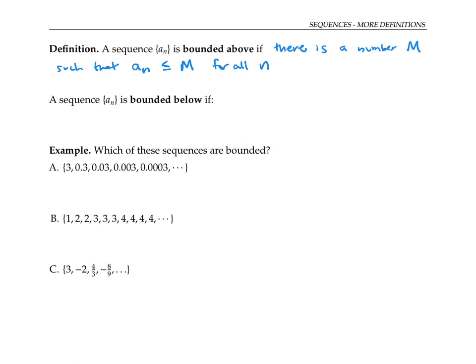A sequence is bounded below if all of its terms are greater than or equal to some number. In other words, there's a number lowercase m such that a sub n is greater than or equal to lowercase m for all n.